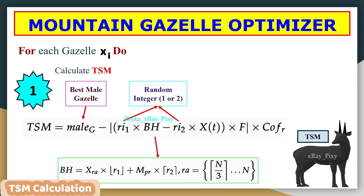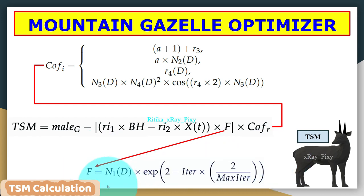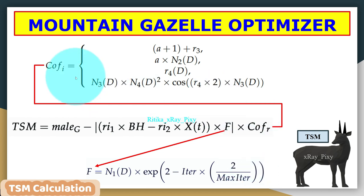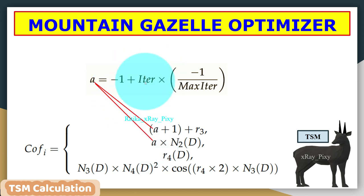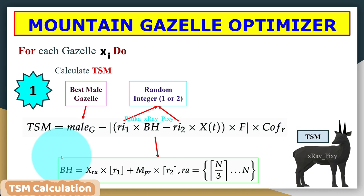For xra — the random solution representing young males — r1 and r2 are random values between 0 and 1 from a normal distribution. The value for ra is calculated using capital N (population size). mpr is the average number of randomly selected search agents. fw is calculated using its equation, where n1d is a random value with the size of the problem dimension determined using standard distribution. A coefficient vector is updated each iteration to enhance search capability, with n2, n3, n4 as randomly generated values and a cosine function. The value for a equals minus 1 plus (current iteration × (minus 1 divided by maximum number of iterations)).